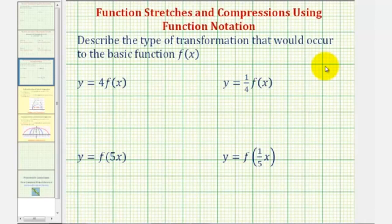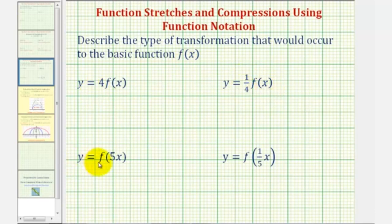We want to describe the type of transformation that would occur to the basic function f of x. We're given y equals four times f of x, y equals one fourth times f of x, y equals f of five x, and y equals f of one fifth x.